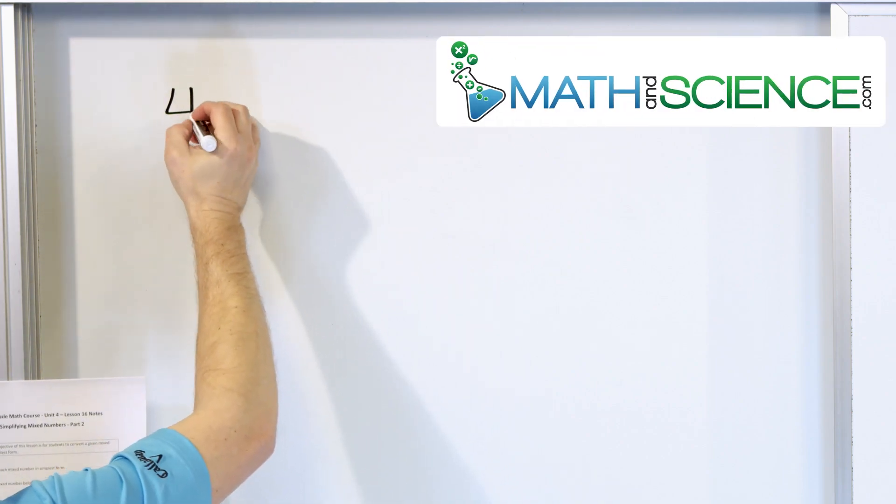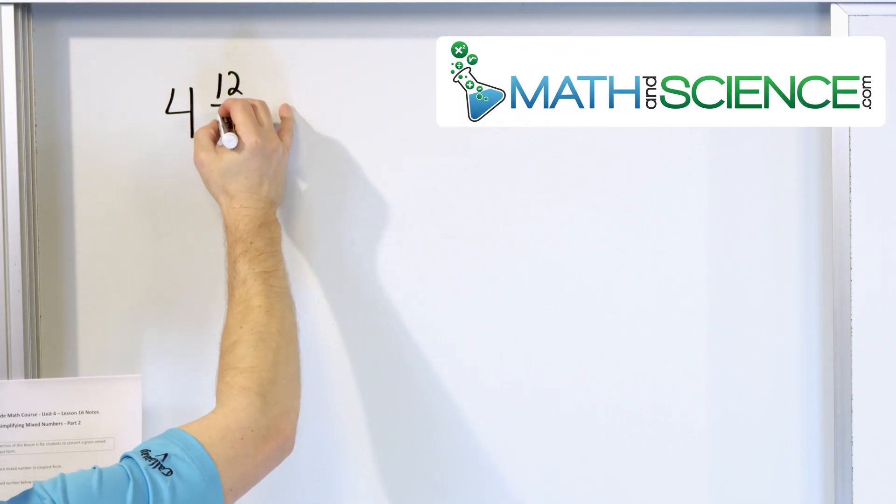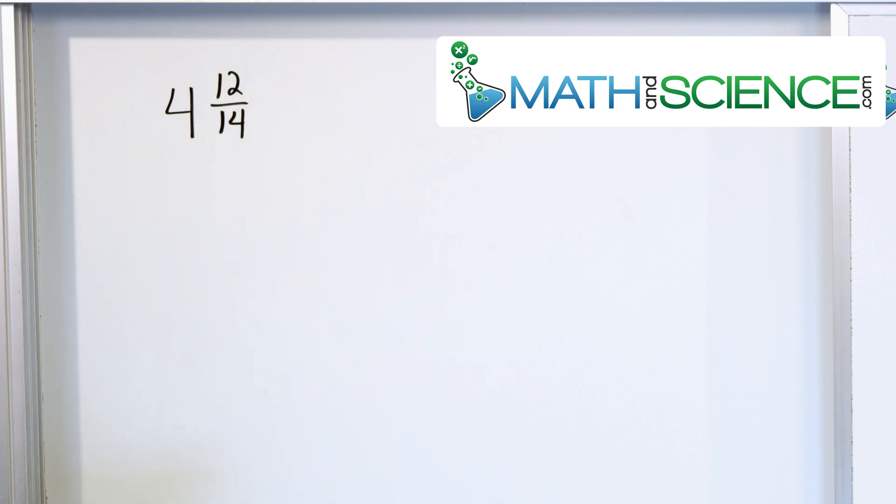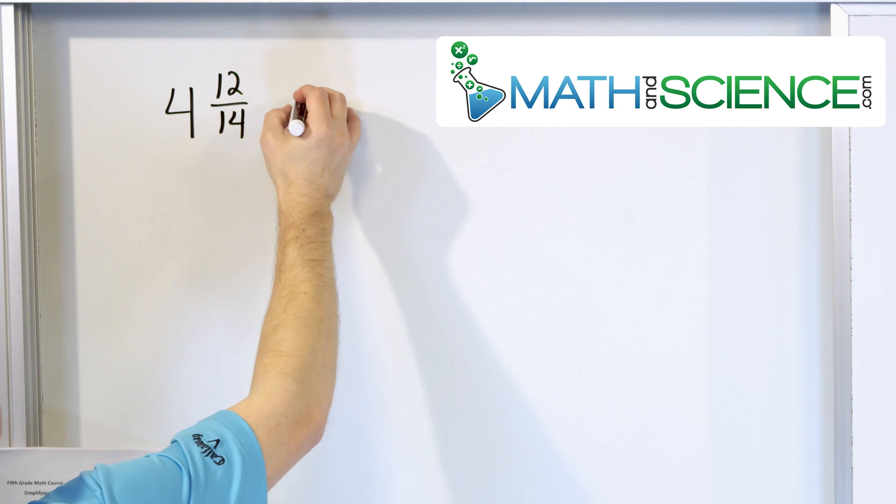Let's take the mixed number 4 and 12/14ths, and we would like to simplify that. So we see the 12 and the 14, they're both even numbers, so we can simplify that.